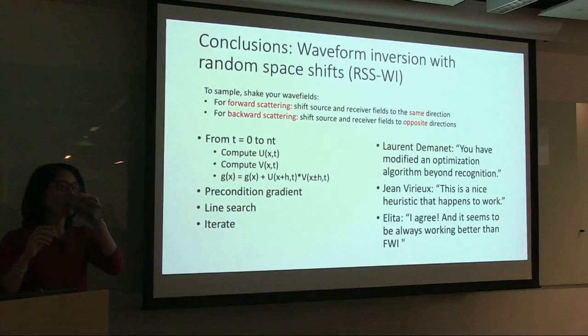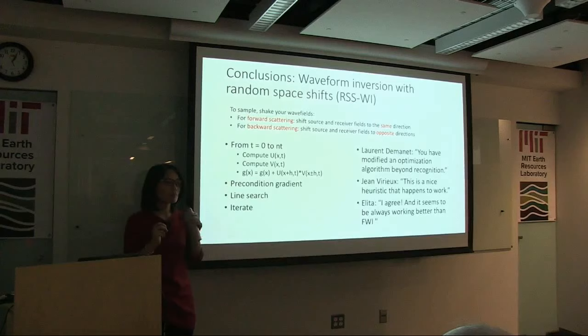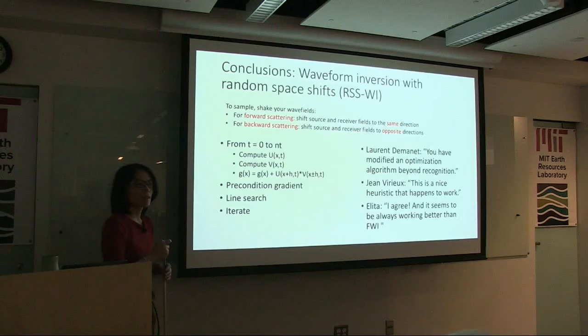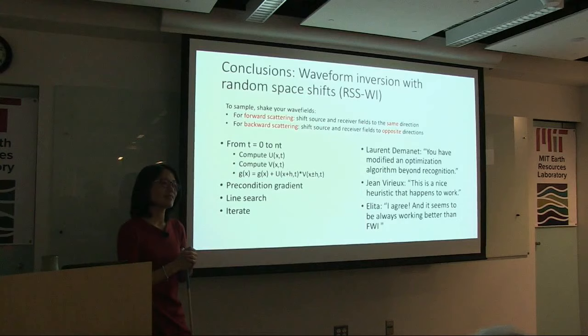Q&A: Is there any relationship to other extended domain methods like TFWI? Yes — in TFWI you explicitly extend the full model space, making it huge, and then design algorithms to constrain the extended domain throughout iteration, which is tricky. In our approach, we implicitly extend and immediately reduce the model at each time step — like implicitly scanning the extended domain but only selecting one sample and reducing right away, which greatly reduces computational overhead.